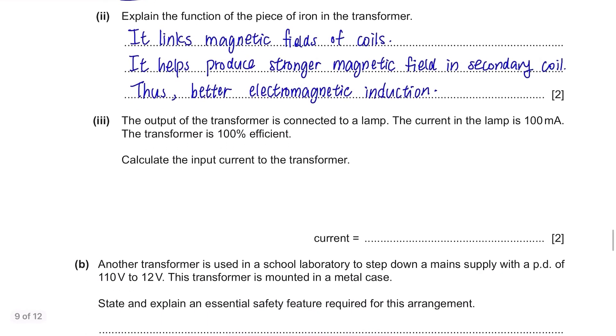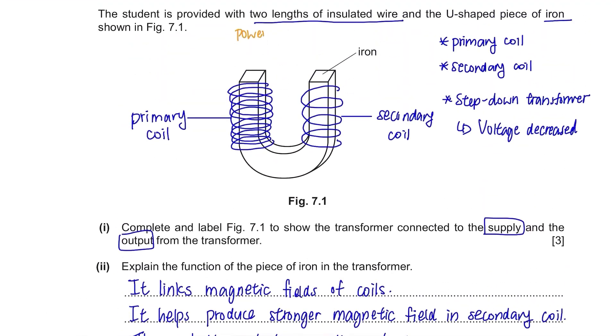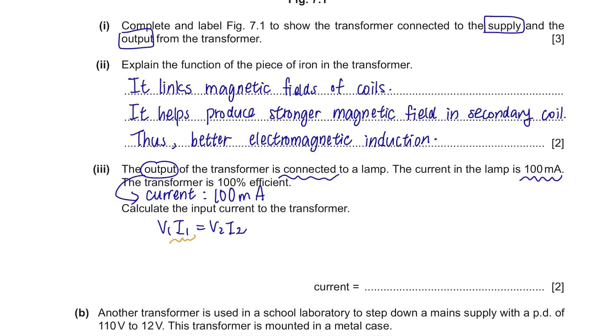The output of the transformer is connected to a lamp. The current in the lamp is 100mA. The transformer is 100% efficient. Calculate the input current to the transformer. The output is connected to a lamp which the current is 100mA, meaning the current in secondary coil is 100mA as well. The power of primary coil is the same as the power of secondary coil, so the product of voltage and current in primary is the same as in secondary. We need to find the current of the primary, the input, so I1 is the unknown. Rearrange it: I1 equals V2I2 divided by V1. 100mA converted to amperes is 0.1A. So 2 times 0.1 divided by 12 equals 0.017A.